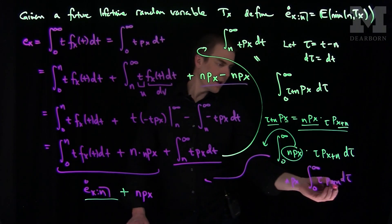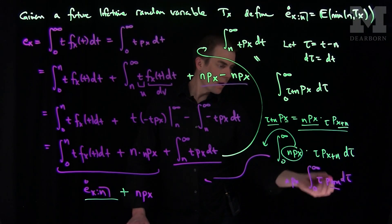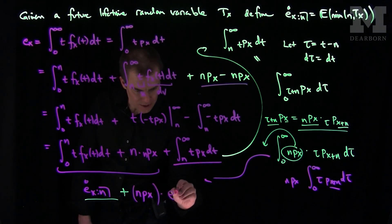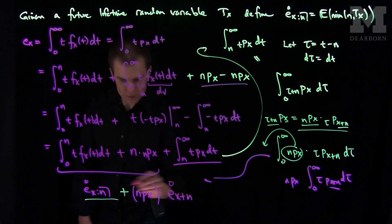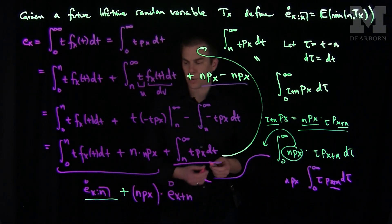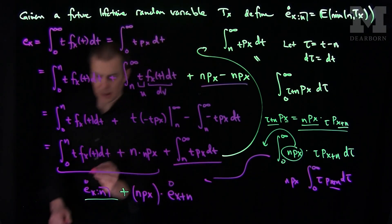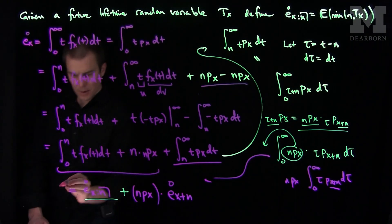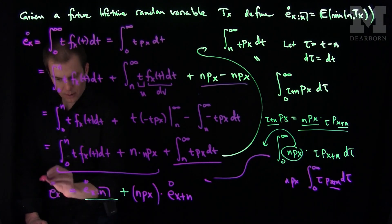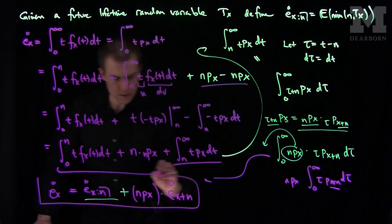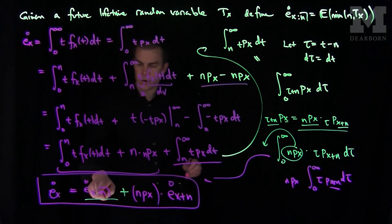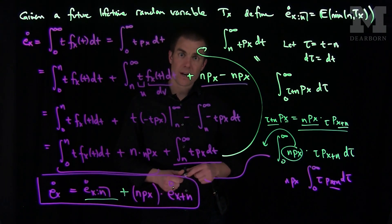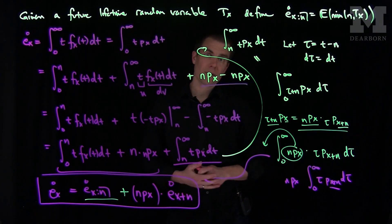That's exactly the expected future lifetime of a person aged x plus n. So this will be npx times e x plus n circle. And that is our recursion formula. So we're able to write down the e x, and this of course is a circle because we're doing continuous. So e x circle is the temporary life plus the survival probability that you survive n years times the expected life for an age of x plus n. Thank you very much.